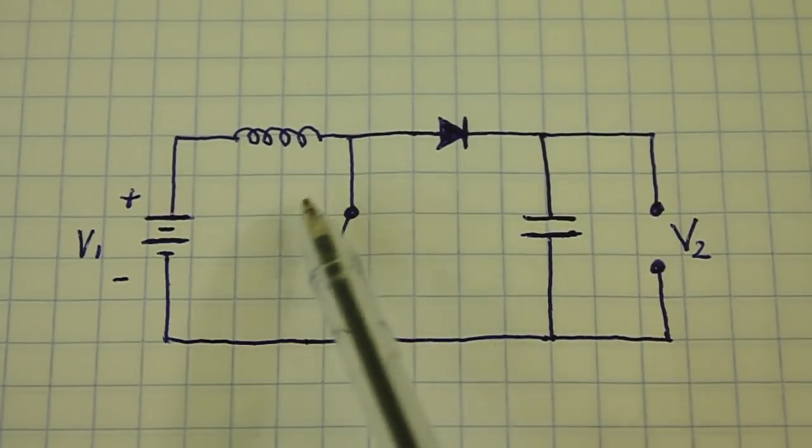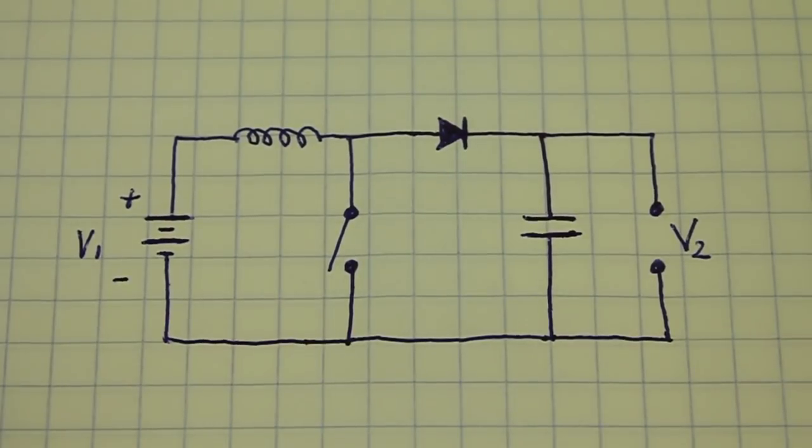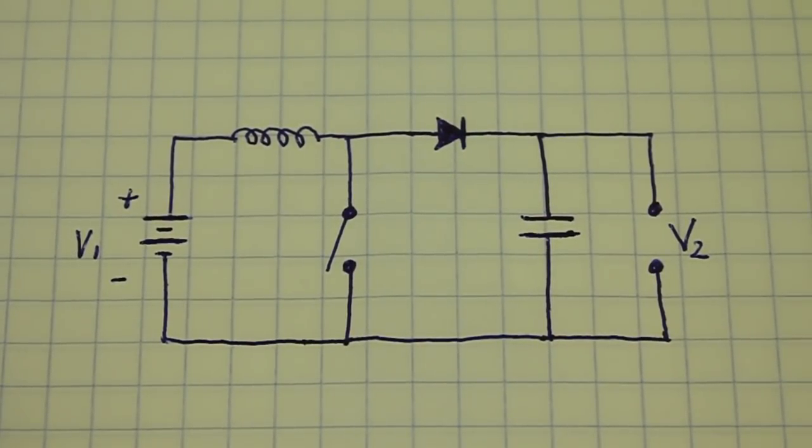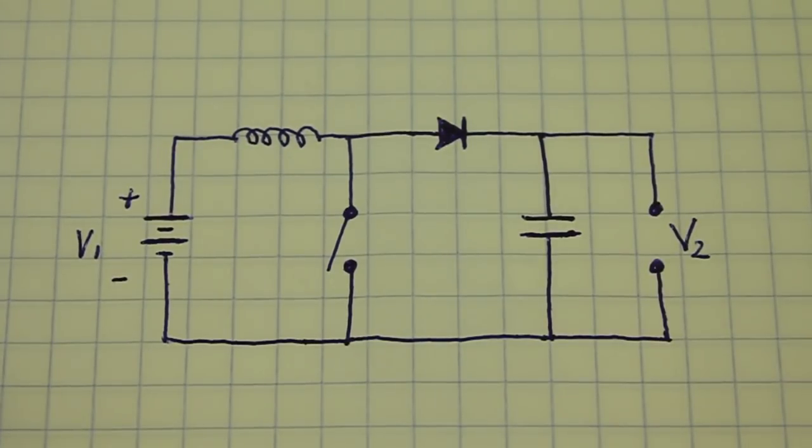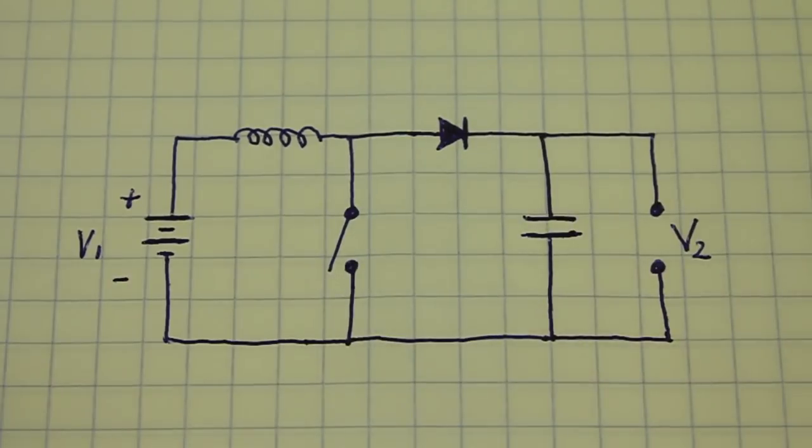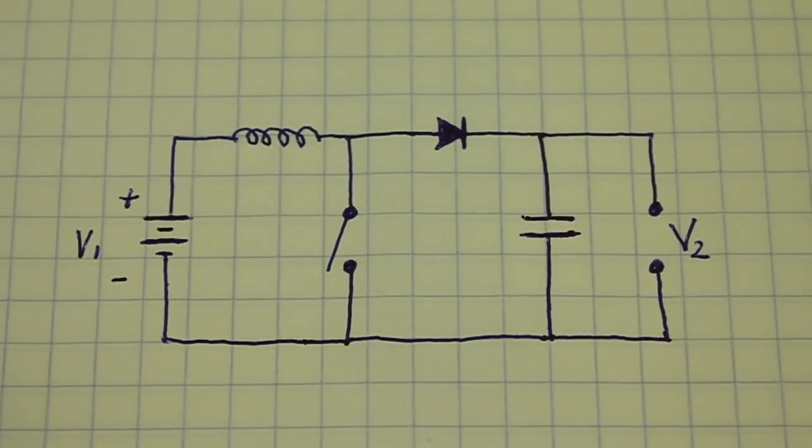But we can also do the commutation using an electronic oscillator or an electromechanical oscillator, that is, using a relay, which is what we will do in this video.